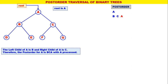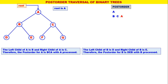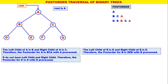We always consider the leftmost blue node first. The leftmost blue is B. The left child of B is D and the right child of B is E. Therefore, the post-order for B is D, E, B — with B processed. B is replaced by D, E, B with B processed. Next, the leftmost is D. D does not have a left child or right child. Therefore, the post-order for D is D only, with D processed.